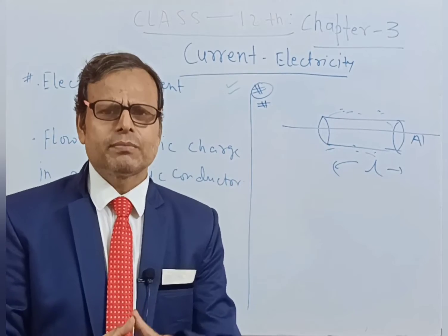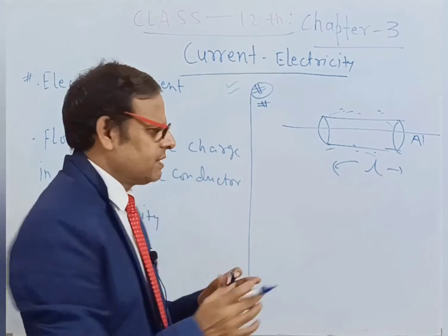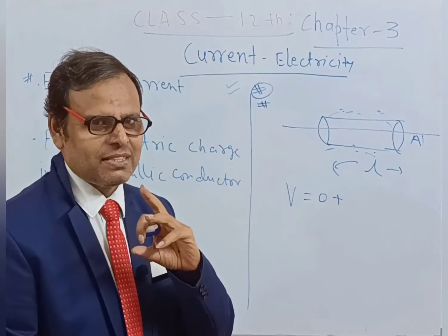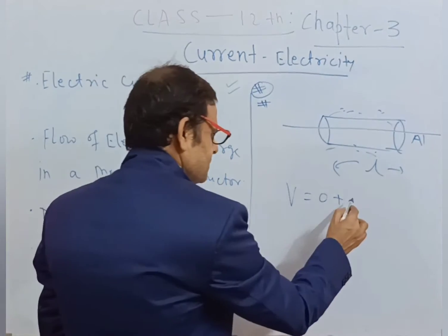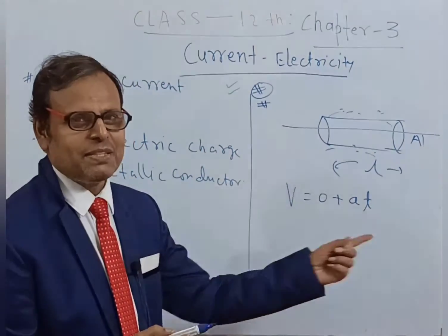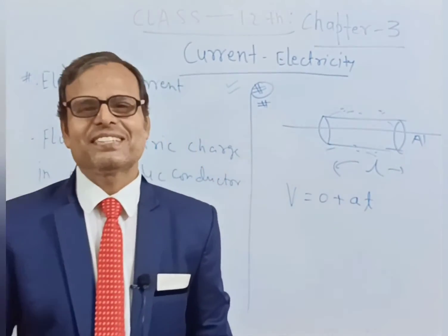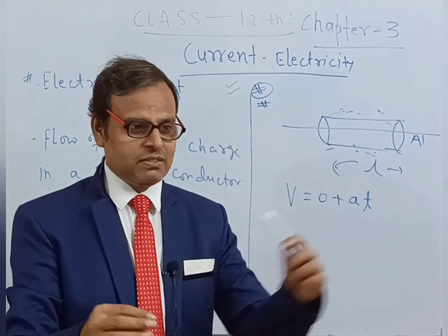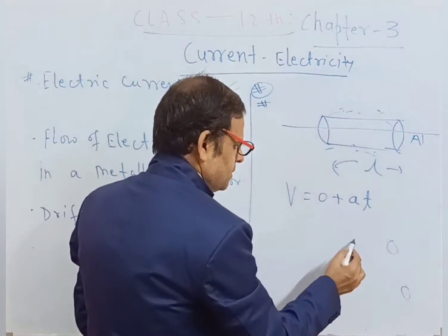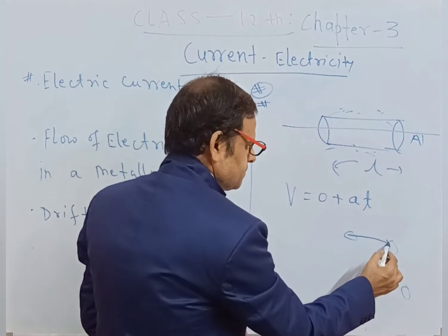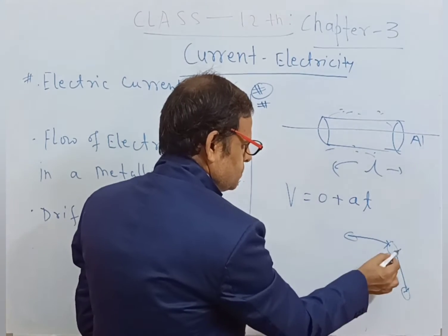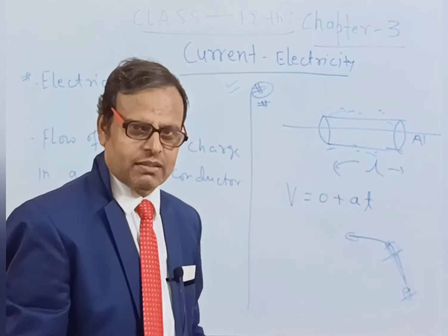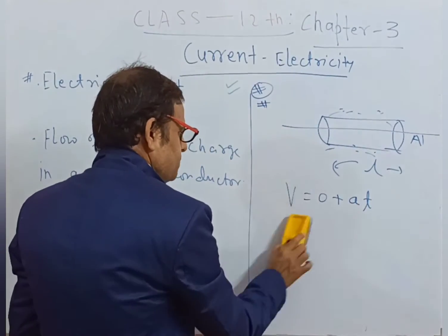Initially, let their initial velocities be zero. Then velocity V equals zero plus, due to the EMF of the battery, the free electrons get drifted with acceleration A over relaxation time T. T is the relaxation time — the time between two successive collisions of free electrons. One electron collides, then collides again; the time between those two successive collisions is the relaxation time.